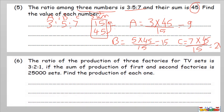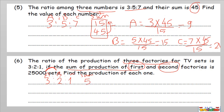Question number six: the ratio of the production of three factories for TV sets is 3 to 2 to 1. You have three factories A to B to C. Now be careful — this time the sum is not between all of them. Read the question well: if the sum of production of the first and the second — so we make plus only between the first and second: 3 plus 2 equals 5. Keep the third as it is.